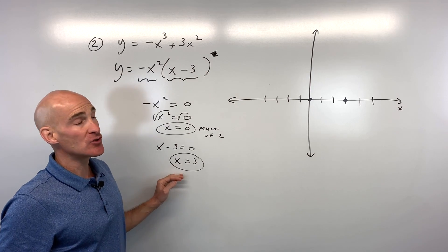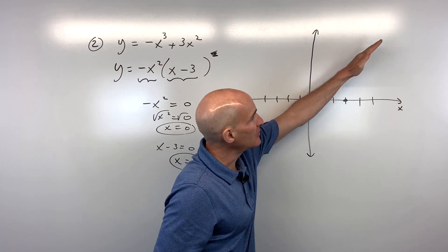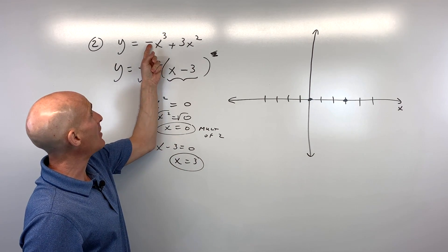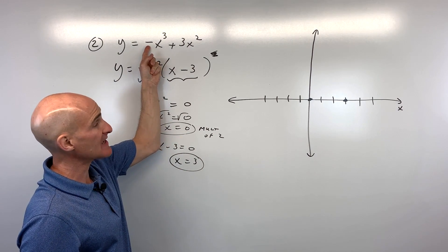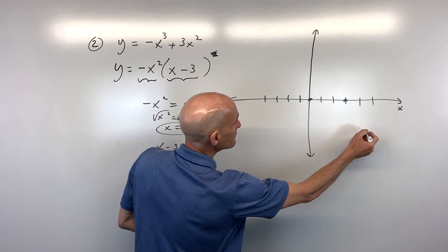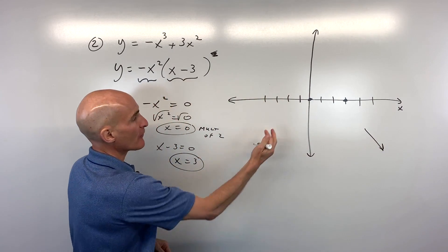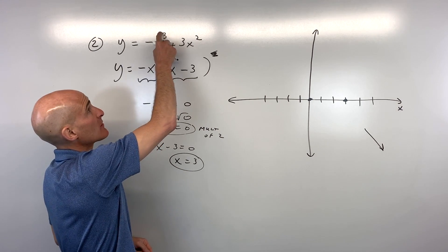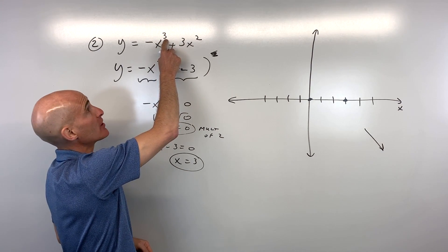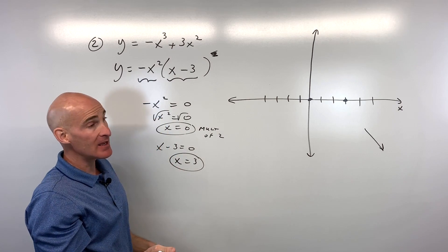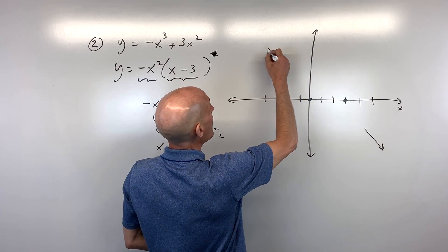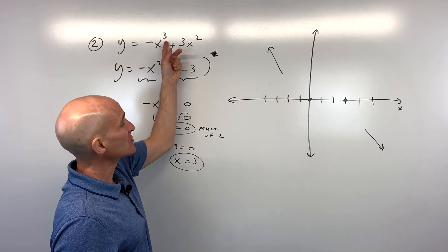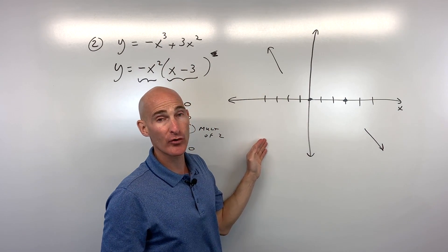For end behavior: the leading coefficient is negative, so the graph goes down to the right. The degree is 3, which is odd — so the left and right ends are opposite. That means the graph goes up to the left. If it were even degree, like x to the fourth, both ends would behave the same — either both up or both down.